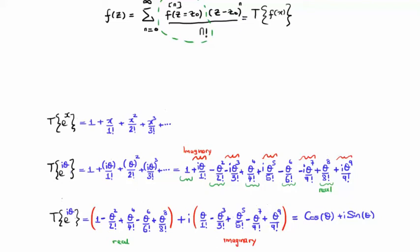So the Taylor series expansion of e to the iθ has the following real components and the following imaginary components. That is to say, it is a complex number. And it turns out that these terms here are the Taylor series expansion of cosine θ, and these terms here are the Taylor series expansion of sine θ.